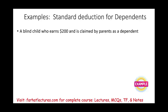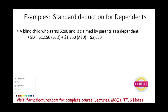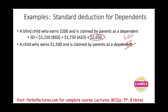Example one: a blind child who earns $200 is claimed by their parents as a dependent. Their standard deduction is the base $1,150 plus the additional standard deduction for blindness, totaling $2,650. Example two: a child earns $1,500 and is claimed as a dependent. The standard deduction is the greater of $1,150 or $400 plus $1,500 = $1,900. Since $1,900 is greater, their standard deduction is $1,900.